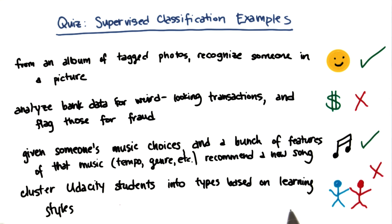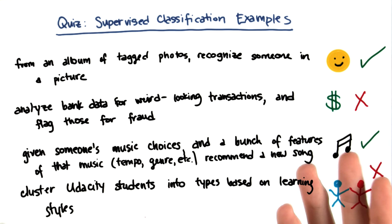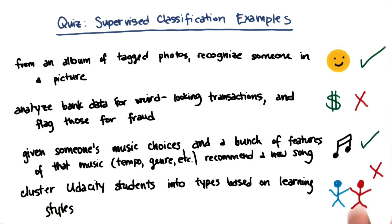Another thing that's usually unsupervised learning is clustering. In this example, we don't know what the types of students are — we might not even know how many different types we're looking for. There are still ways we can approach this problem, but this isn't an example where you have a big bank of training data where you already know the correct answer.